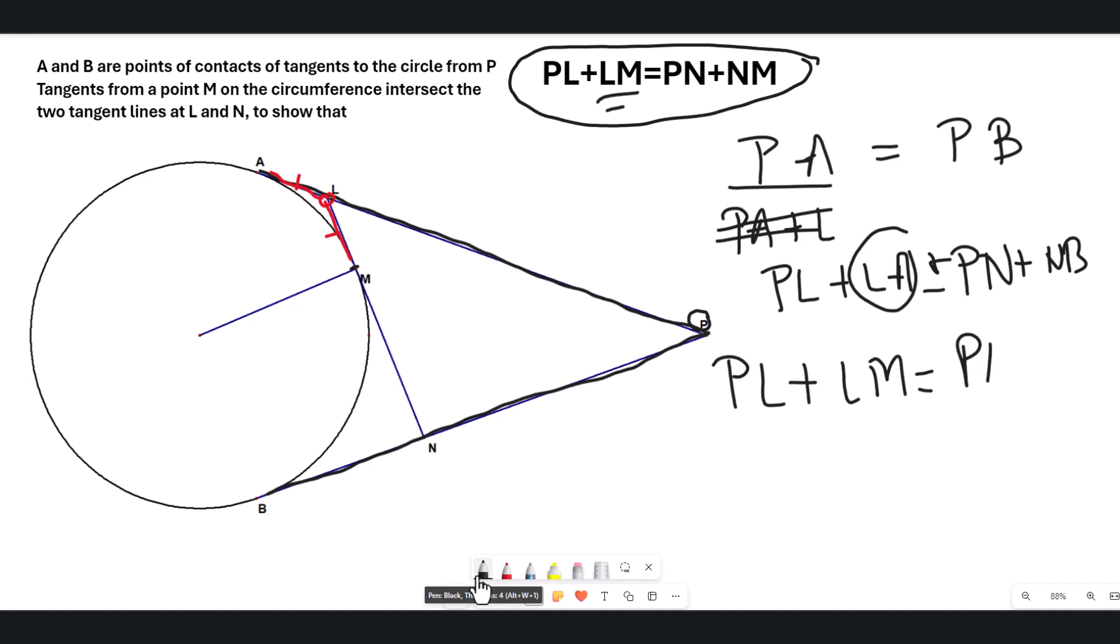And then here also, along the same grounds, we can notice that this and this are congruent. So what will happen now is that I can replace NB by NM. Okay, so that's what we had to do. All right.